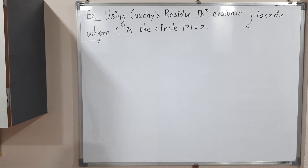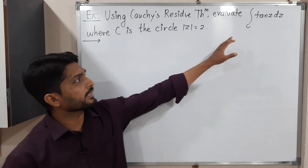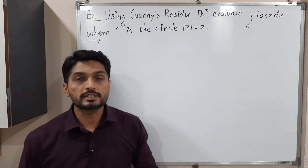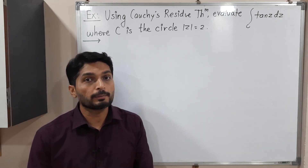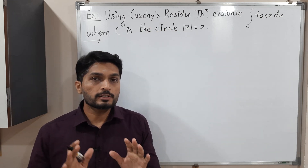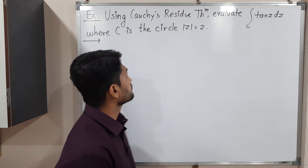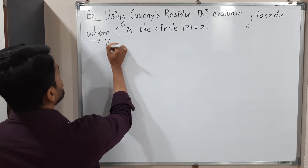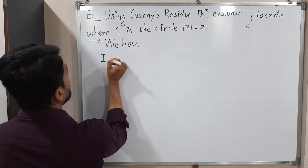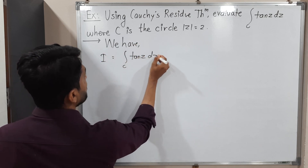Hi everyone, in this video we are going to discuss this example. We have to solve this simple integration over curve C, which is a circle mod Z equal to 2, with the help of Cauchy's residue theorem. Let us call the given integral as I. We have I = ∮_C tan(z) dz.